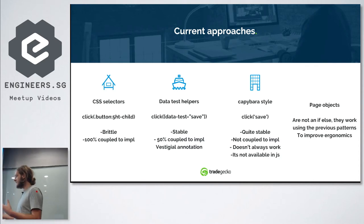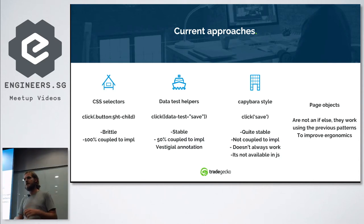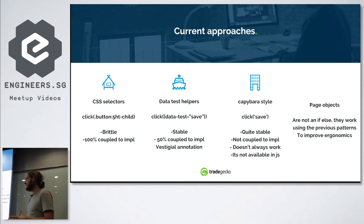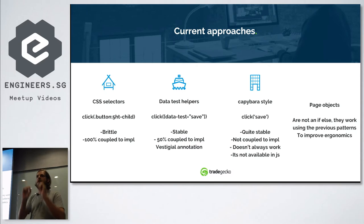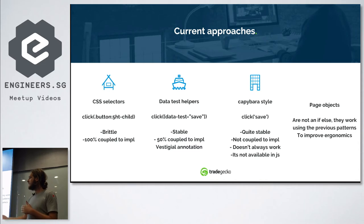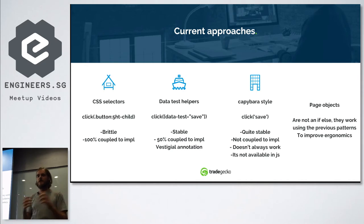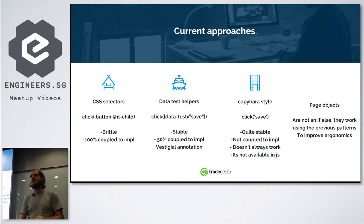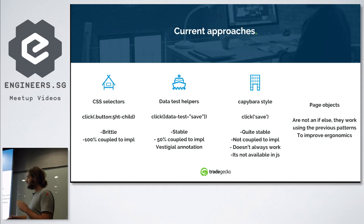One solution was data-test helpers. In HTML it's valid to write data-dash custom attributes on your tags, so you add little annotations and check those in tests. This gives stability but is still somewhat coupled to the code. I call it a vestigial annotation because the first thing we do is strip it from the DOM in production — we put in all this effort and our users get nothing out of it.